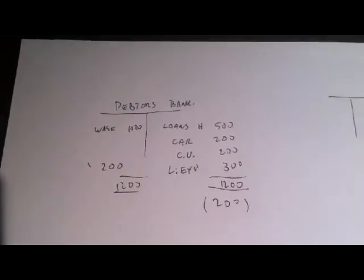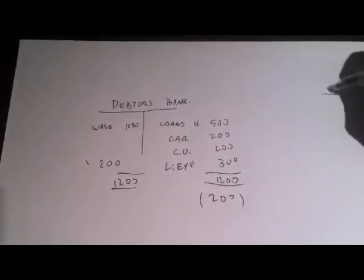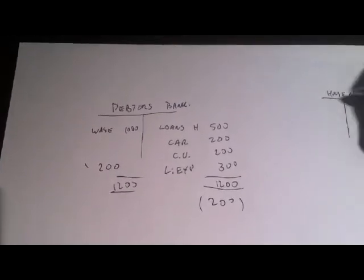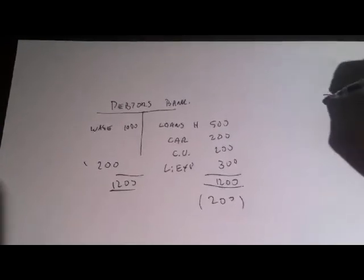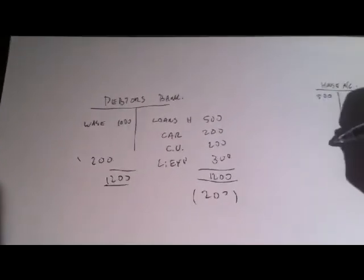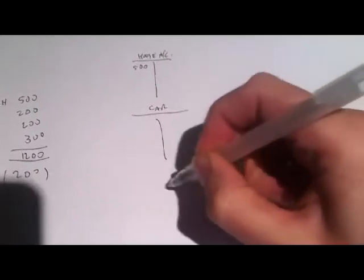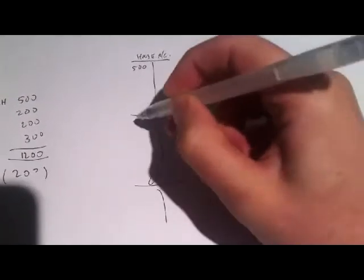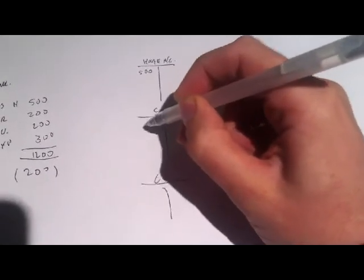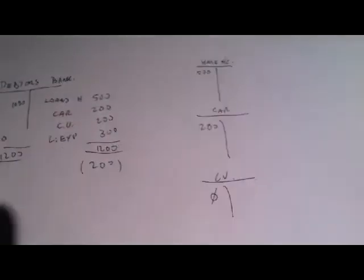So what might actually be happening is that over here, we'll say this is the house account, this is the bank, the bank's bank. They might be getting $500, the car and the credit union might be getting $200, and the credit union is getting nothing. That's how it's working at present. So the person wants to go for insolvency.